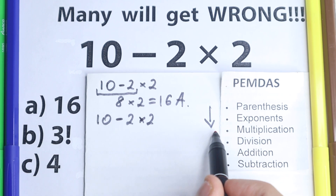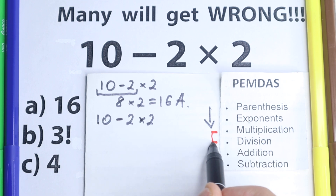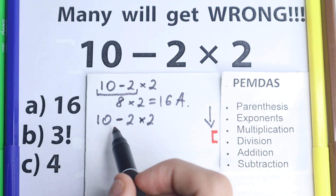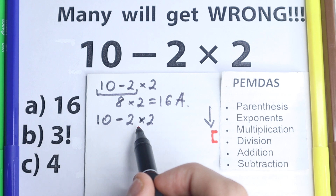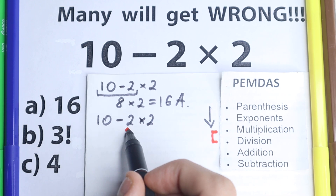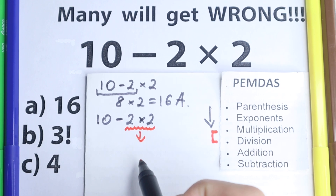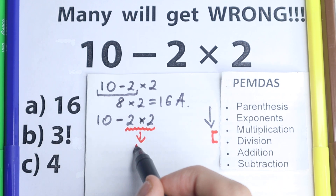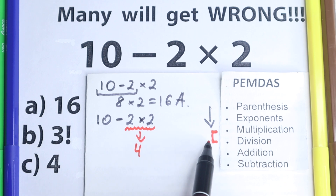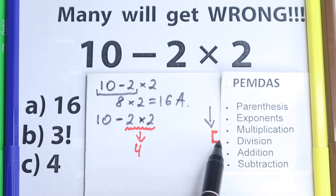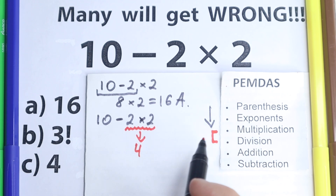Very simple question, so we just skip these two steps and go to the next step. The next step is the Multiplication and Division part. Are there any multiplication or division signs? We have subtraction here, and we have multiplication: 2 times 2 equals 4. Multiplication and division always come before addition and subtraction — every time we solve those first.